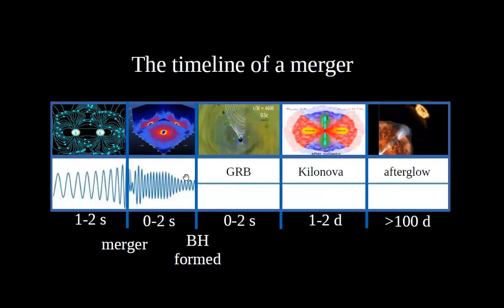The merger timeline: before merger, the two neutron stars approach, with magnetosphere interactions possibly producing a precursor pulse, and gravitational waves are observed for perhaps 7–10 seconds before merger. At merger, a single core forms — the hypermassive neutron star. While it remains non-collapsed, it continues emitting gravitational waves whose signal depends strongly on the equation of state.